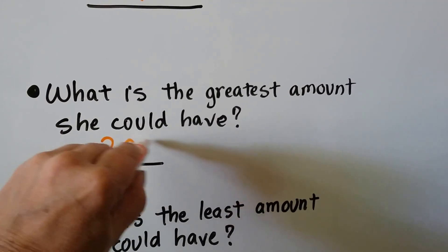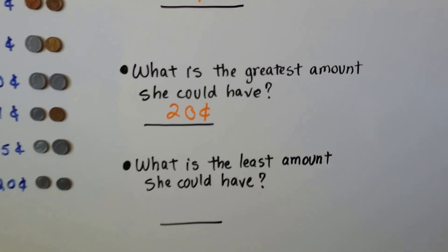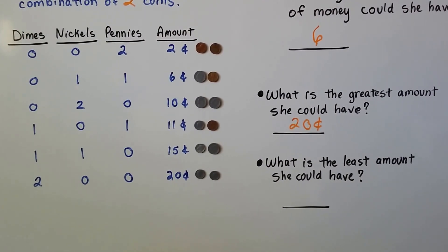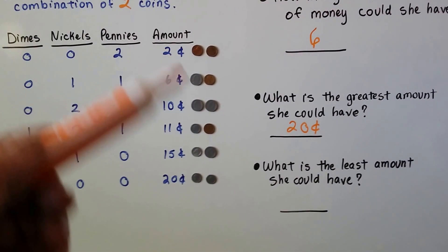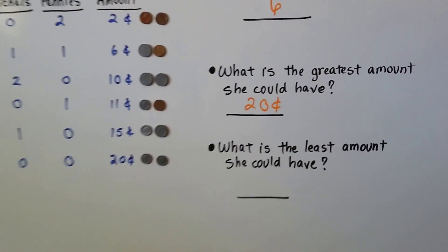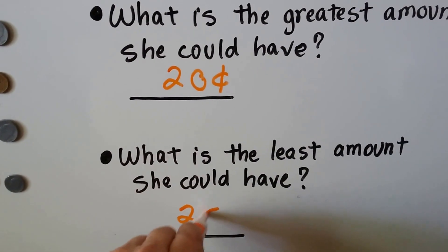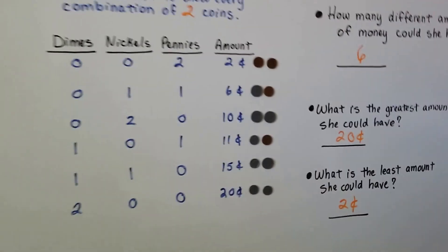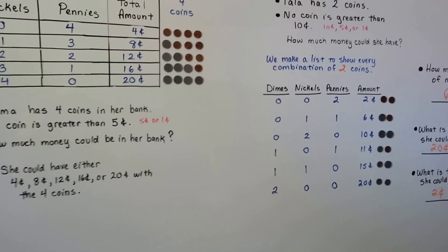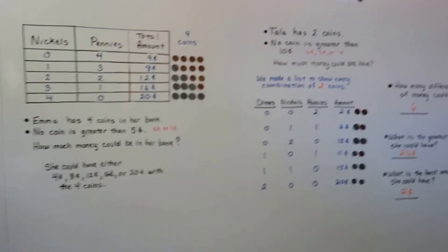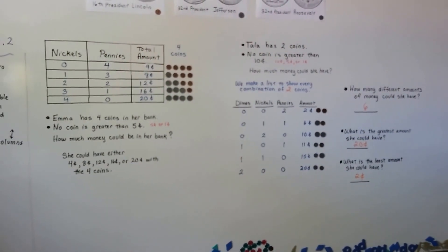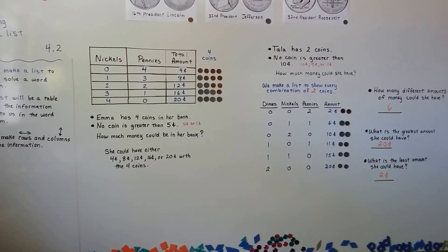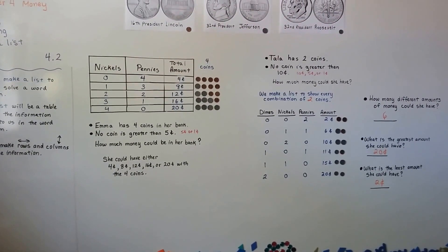Twenty cents. And what is the least amount she could have — the smallest amount? That would be the two pennies, which is two cents. So you can make a table to help you answer word problems and organize the information given to you in the words. I'll see you next video — have a great day, bye!